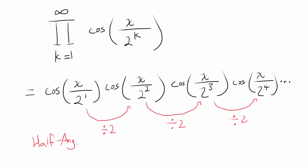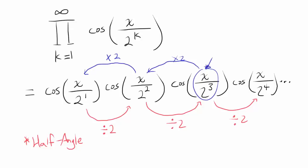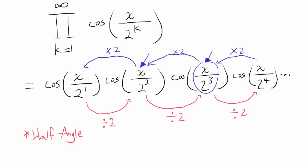Half-angle formulas are very complex and usually not easy to work with, so they may not be the way to go. But looking at this backwards, we have a multiplying-by-2 relationship. Cosine of x over 2 squared: multiply the argument by 2 and you get cosine of x over 2. So maybe we can use double-angle formulas — they are usually easier to apply and we can be more creative with them.